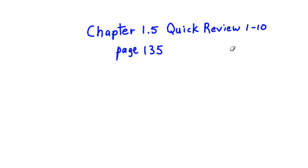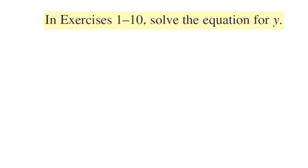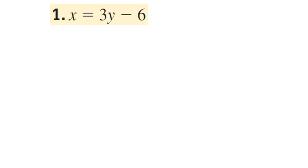Chapter 1.5 quick review problems 1 through 10, page 135. Section 1.5 has to do with parametric and inverses of functions. We're going to be working on parametric functions next year, but we'll work on inverses with this chapter. These exercises are basic algebraic operations to solve for a variable y, and we're going to be doing the odd number problems.